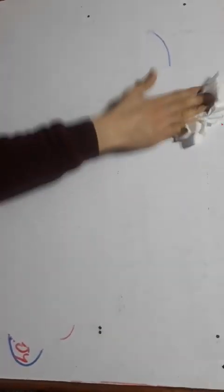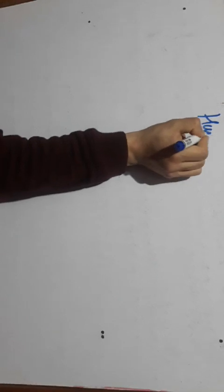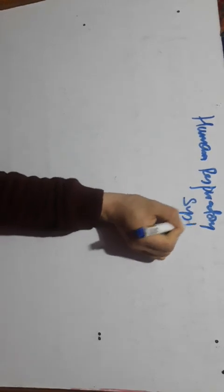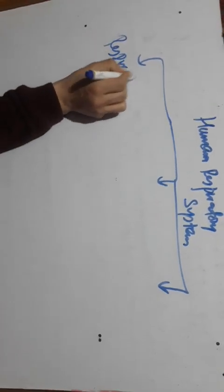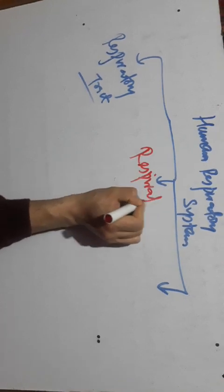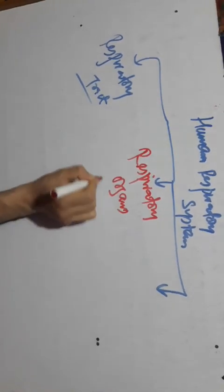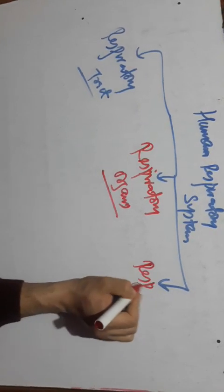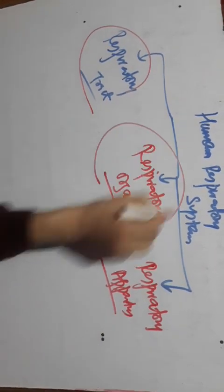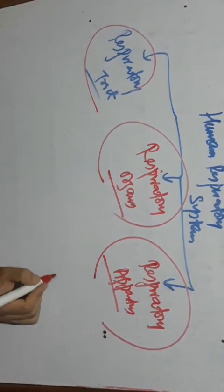Now we move to the human respiratory system. The human respiratory system is divided into three parts: the respiratory tract, the respiratory organs, and the respiratory apparatus. We will discuss these three parts of the human respiratory system in our next video. Thank you so much.